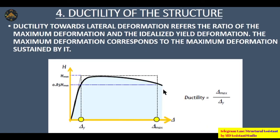The fourth and most important point is ductility. Ductility can be increased by providing ductile reinforcement detailing. Ductility in terms of lateral deformation refers to the ratio of maximum deformation (delta max) to the idealized yield deformation (delta y). The more a building can deform, the more ductile it is. On the graph, delta y represents the ideal elastic yielding point, and delta max represents the non-linear maximum deformation.